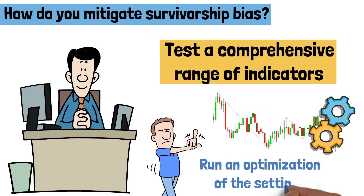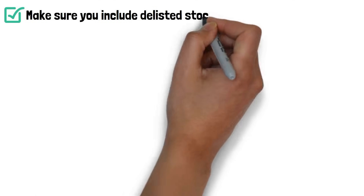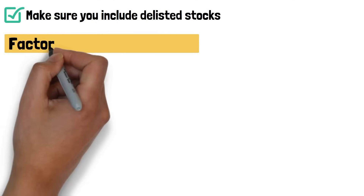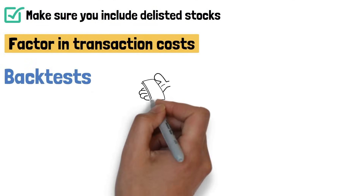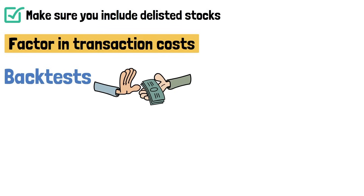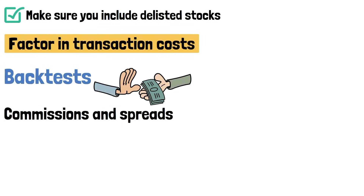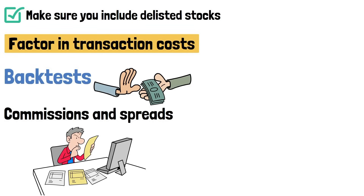Run an optimization of the settings. Make sure you include delisted stocks. Factor in transaction costs – backtests often neglect transaction costs like commission and spreads. Incorporate these costs to get a more realistic picture of strategy performance.